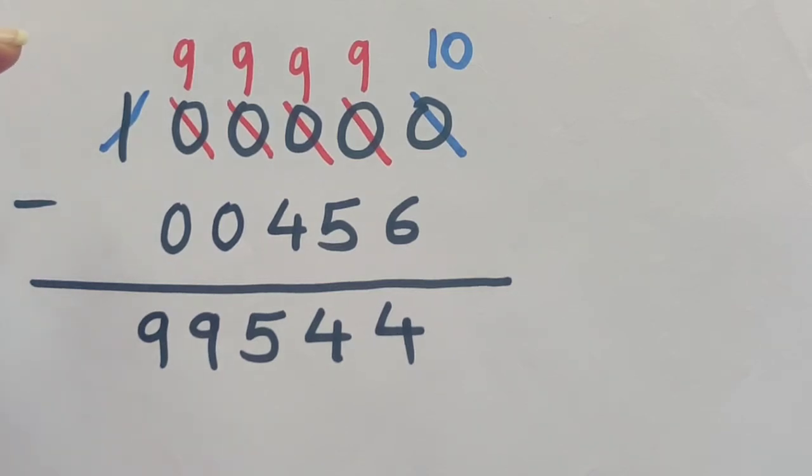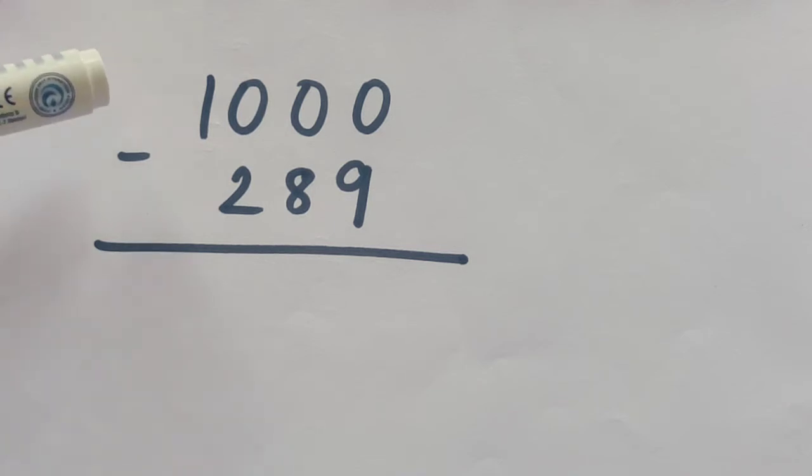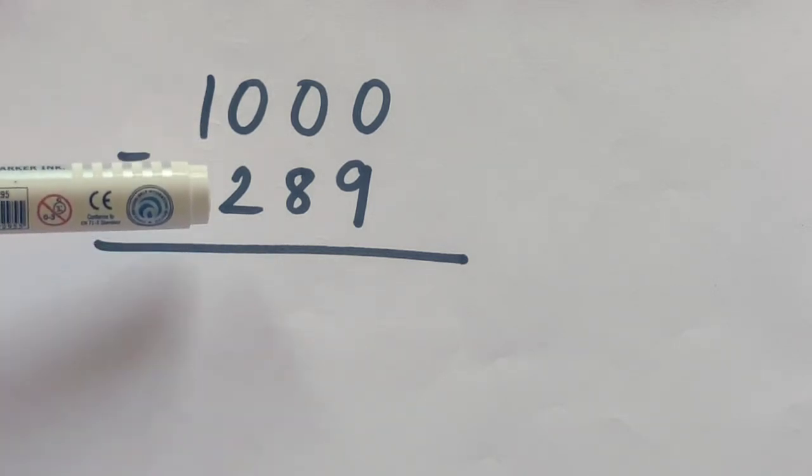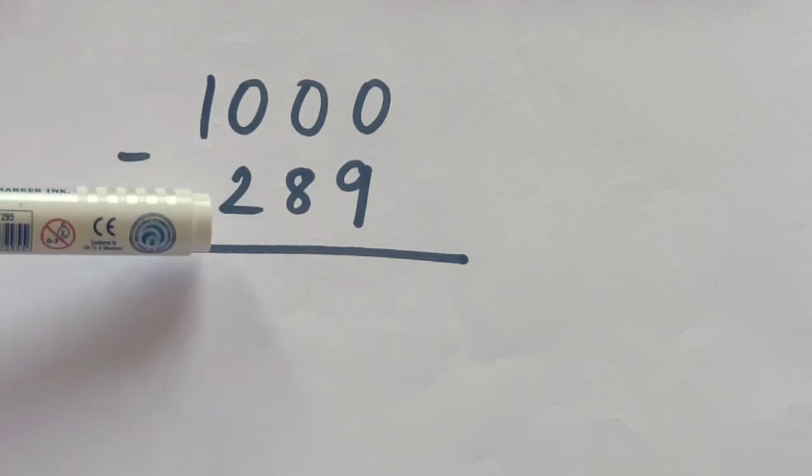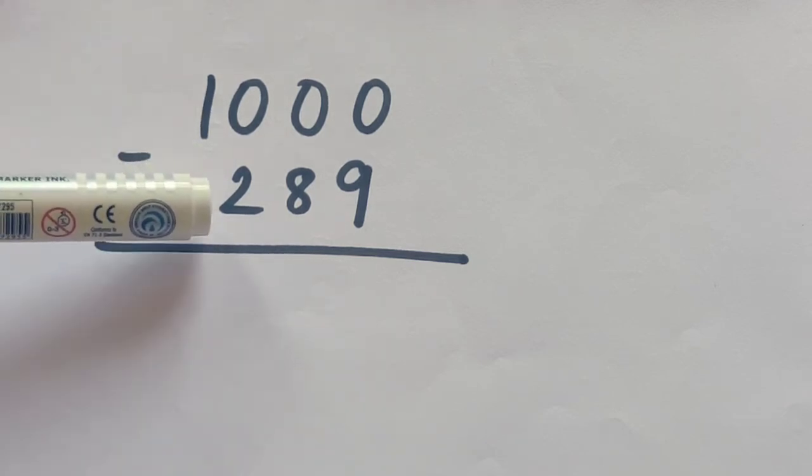Let us take another example: one thousand minus two hundred and eighty nine. The first step is to observe the number of zeros in the smaller number. Here the number of zeros are equal to the number of digits in our smaller number, so no need of adding zeros.